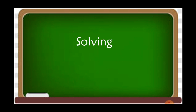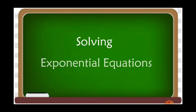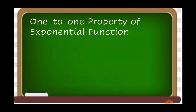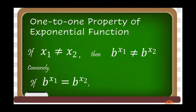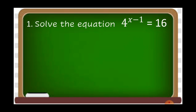We're going to solve an exponential equation. First, let us know what is the one-to-one property of an exponential function. If x₁ is not equal to x₂, then b raised to x₁ is not equal to b raised to x₂. Conversely, if b raised to x₁ is equal to b raised to x₂, then x₁ is equal to x₂.